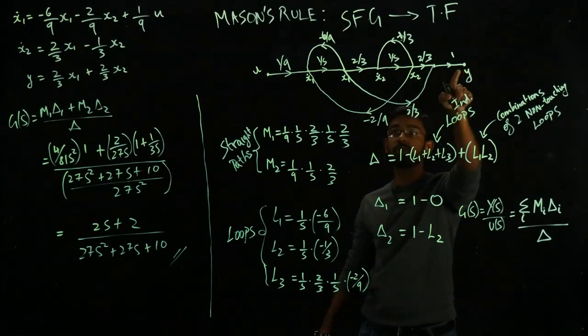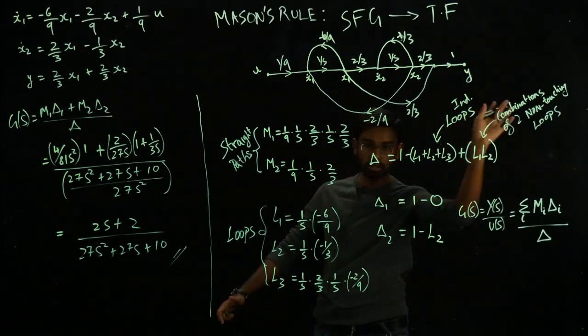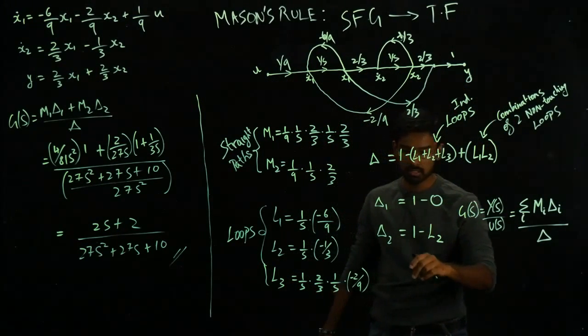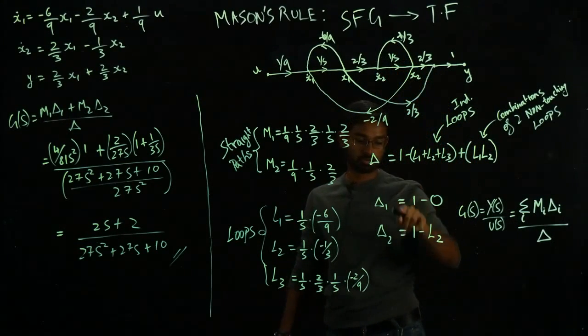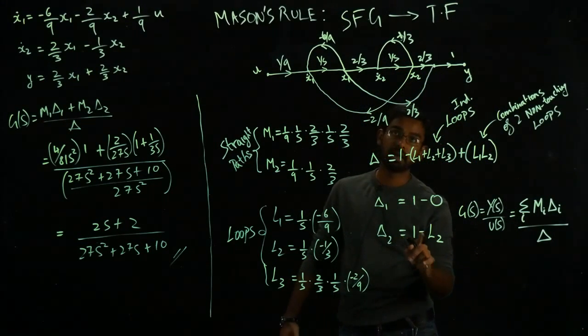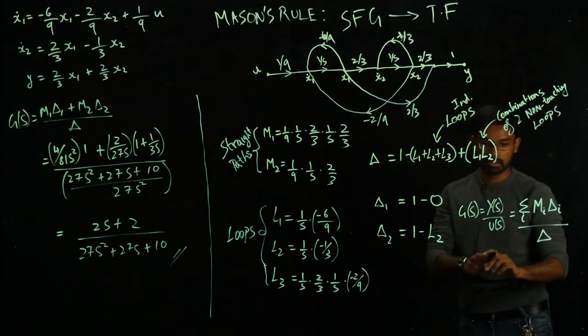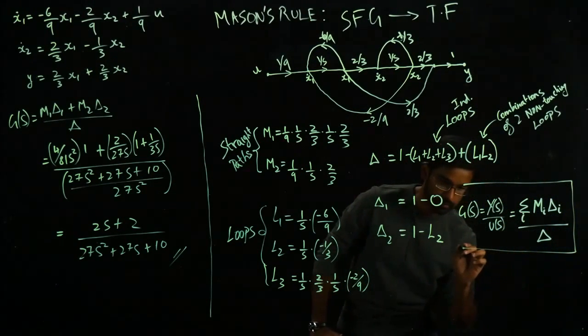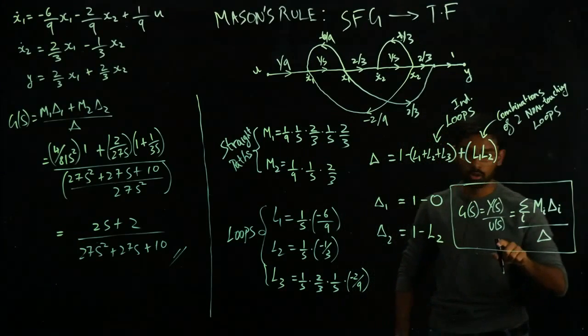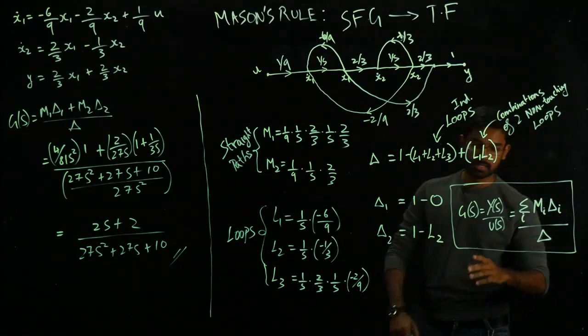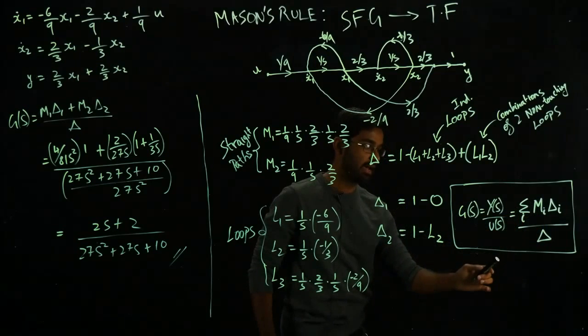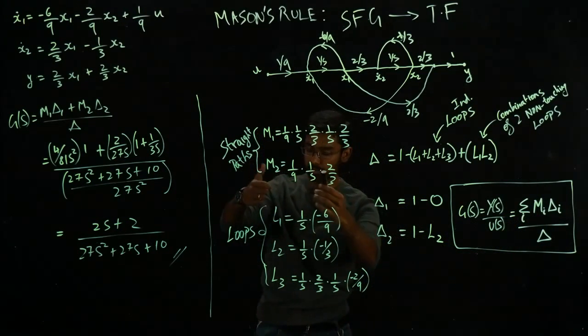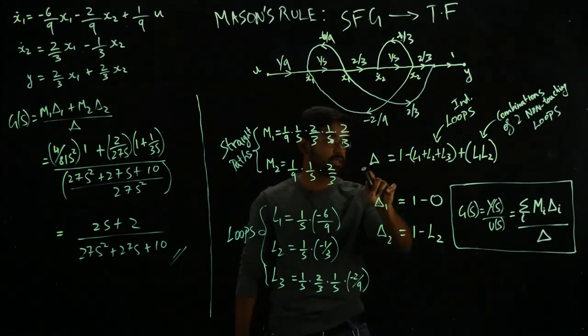So we had L1 and L2, which were not touching each other. And then we didn't have anything else. Of course, this would go on if we had a much more complicated signal flow graph, minus combination of three, combination of, plus combination of four, and then so on. And then we needed del one and del two, which are one minus basically the loops that are not touching the straight path. Del one is obviously this primary straight path, which is touching all the loops, so nothing to be subtracted. And then del two is this guy, which is not touching L2. So you had del two as one minus L2.